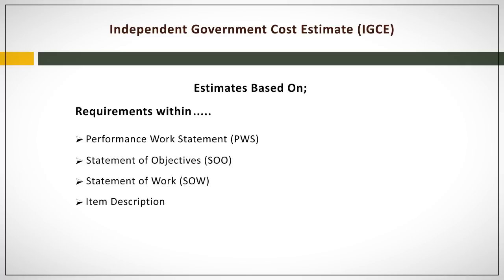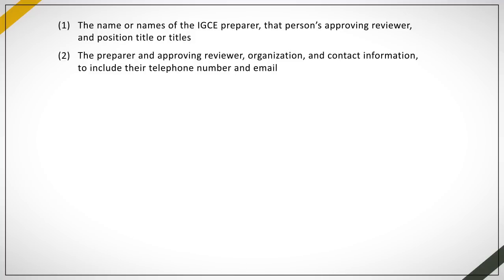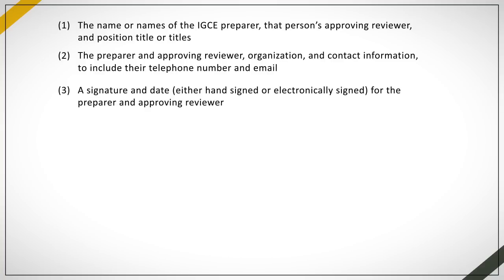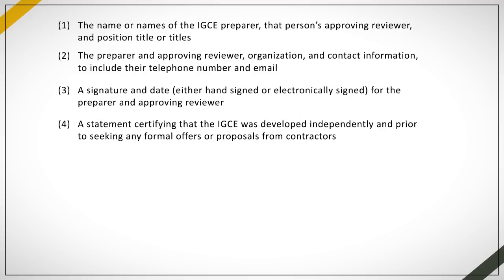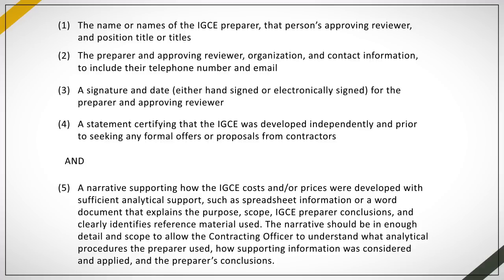The extent of IGCE documentation may be different for each procurement, but you will want to immediately look for: the name or names of the IGCE preparer, that person's approving reviewer and position title or titles; the preparer and approving reviewer organization and contact information, to include their telephone number and email; a signature and date, either hand signed or electronically signed, for the preparer and approving reviewer; and a statement certifying that the IGCE was developed independently and prior to seeking any formal offers or proposals from contractors.